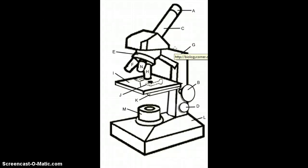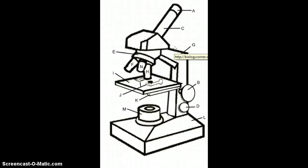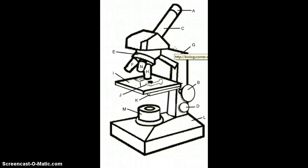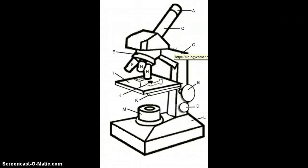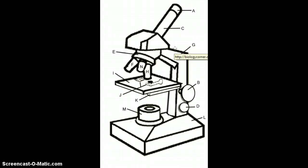The stage is a platform that supports the specimen to be observed. The stage has a hole in its center to allow light to pass through, so specimens must be positioned over the top of this hole.